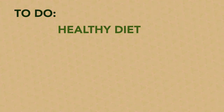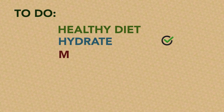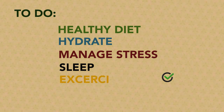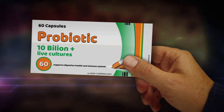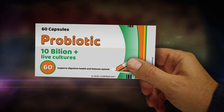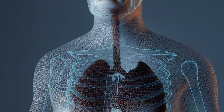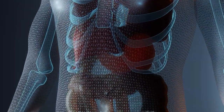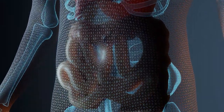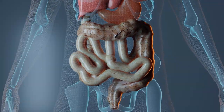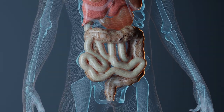There are many things you can do to improve your gut health, including eating a healthy diet rich in plant-based and probiotic foods, staying properly hydrated, managing stress levels, getting enough restful sleep, exercising regularly, and supplementing with a high-quality probiotic supplement. Taking the time to understand how gut flora affects our overall health, and taking steps to ensure it's properly balanced, can have a profound effect on our overall well-being. So make sure you look after your gut health, and it will look after you!